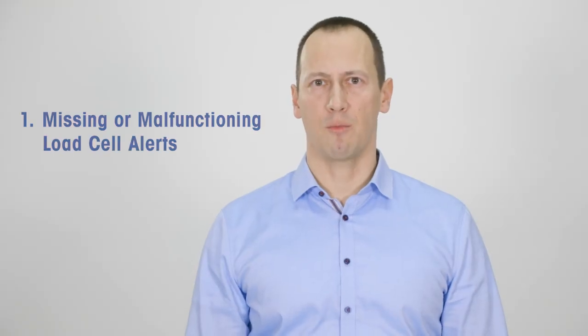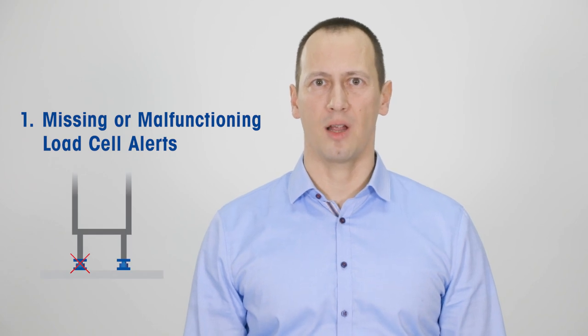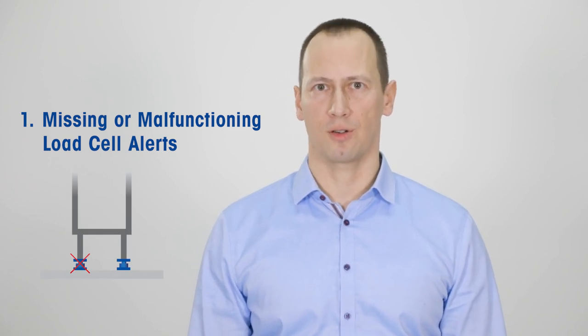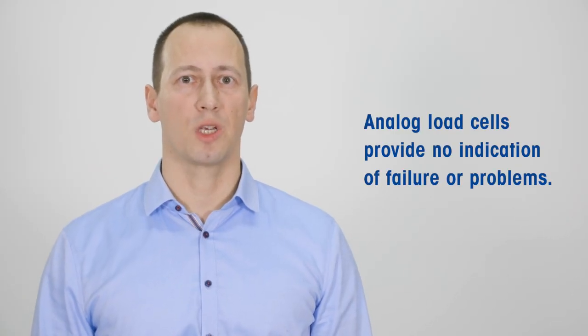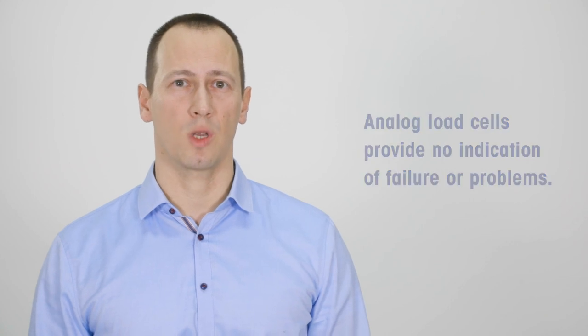Firstly, I will demonstrate how this system alerts you about a missing or malfunctioning load cell. Of course, we assume everything runs as intended, but remember it takes only one failure to result in irreversible consequences of a production batch. In an analog system, the weighing terminal receives the sum of the signals coming from the load cells without any further information about the status of the scale.